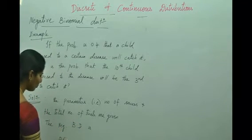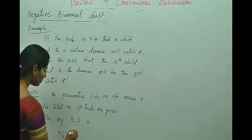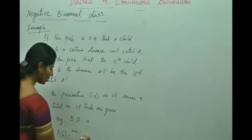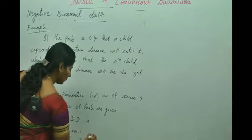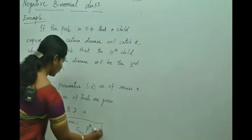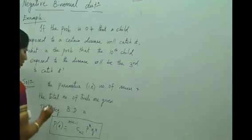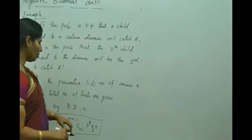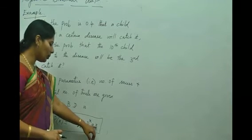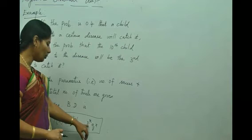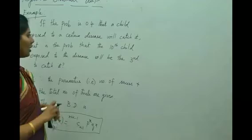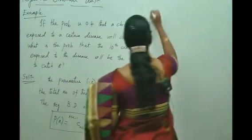The negative binomial distribution formula is: P(x) = (x + k − 1)C(k − 1) × p^k × q^x. This is the formula to find the negative binomial distribution. We need to find out the values of p, q, x, and k.